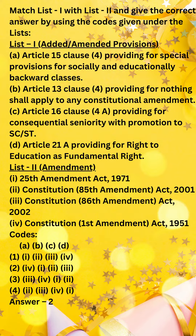The state under Article 15 cannot discriminate against any citizen on grounds only of religion, race, caste, sex, place of birth, or any of them.